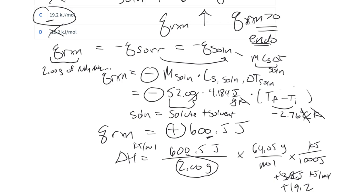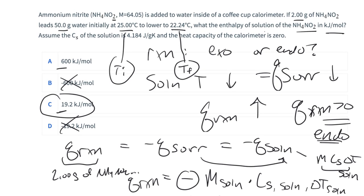A couple of thought questions: if we used 4 grams of compound instead of 2, more reaction would take place, more heat would be absorbed, and the temperature drop would be greater. If we used 100 grams of water instead of 50, there would be more water to absorb the heat, so the temperature drop would be smaller — the solution temperature would drop by less.